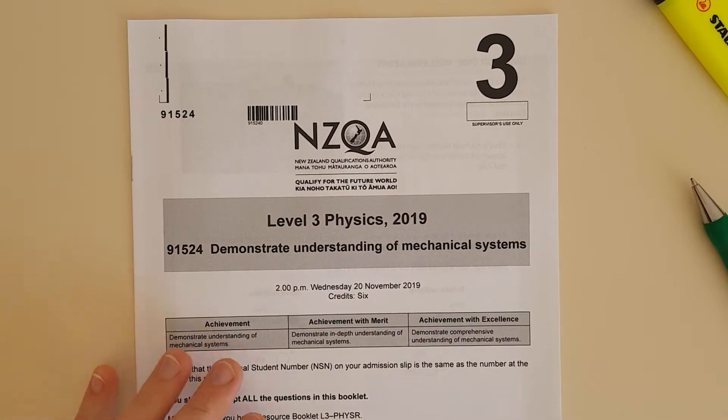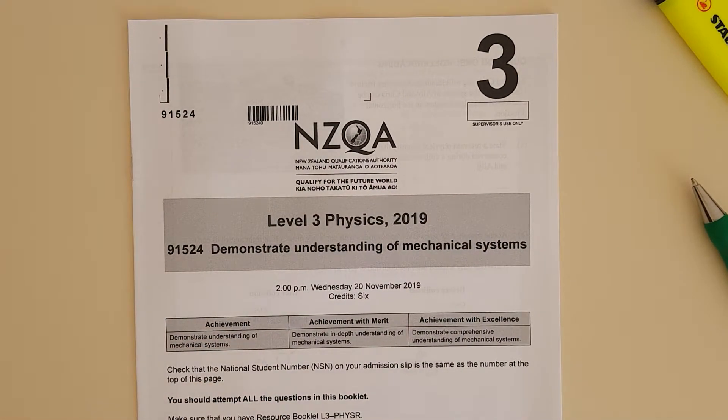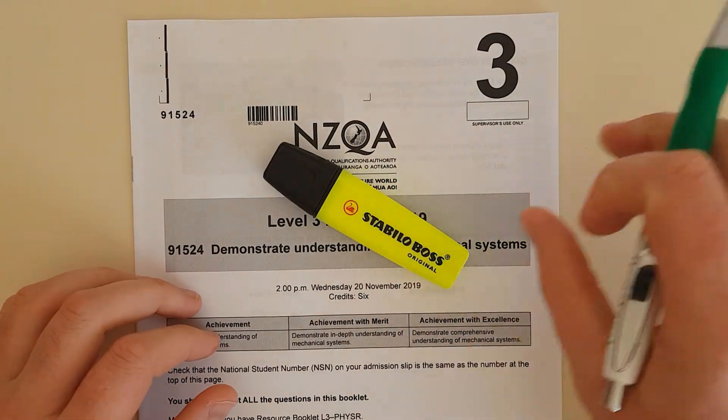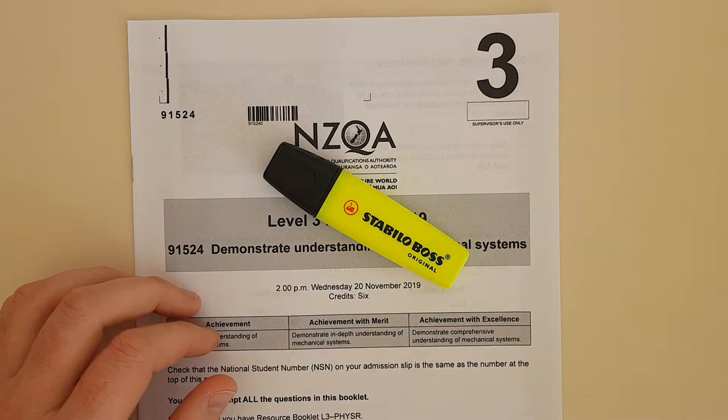Alright, for this video I'll be working through the Level 3 2019 mechanics exam. For this exam you'll need a highlighter, ruler, and a pen obviously.